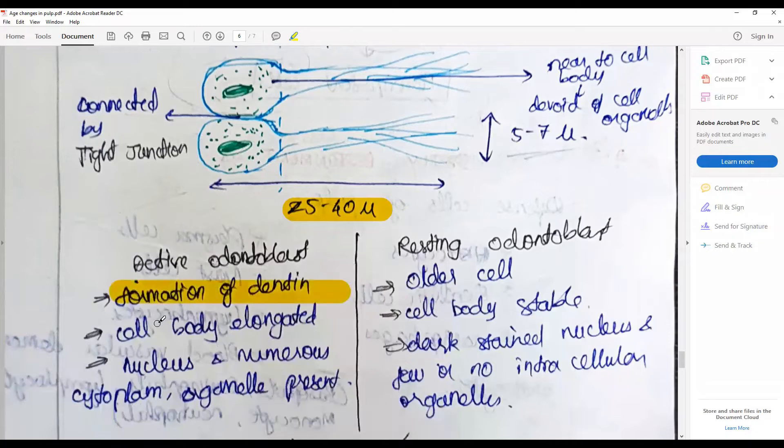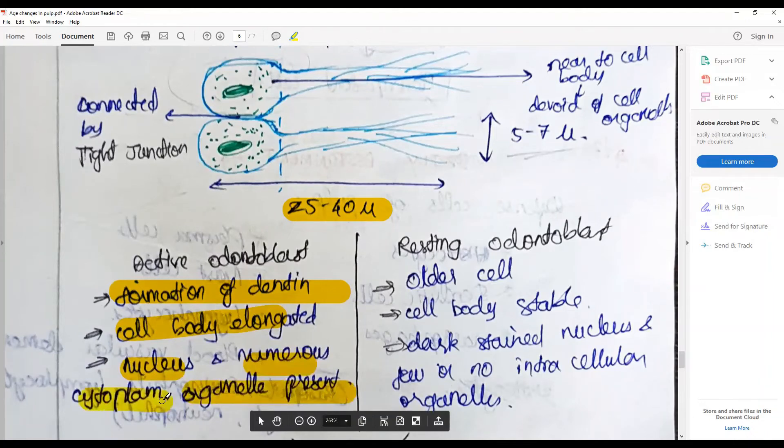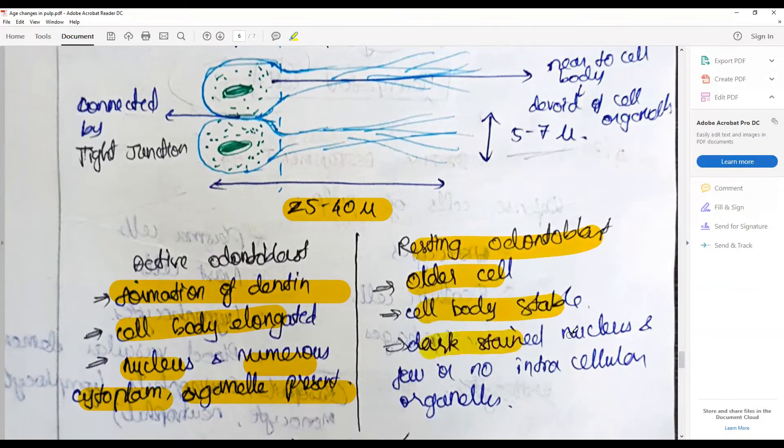Active odontoblasts are involved in the formation of dentin. The cell body is elongated, has a very prominent nucleus and numerous cell organelles along with a prominent cytoplasm. Resting odontoblasts in adults or older cells have a stable cell body.